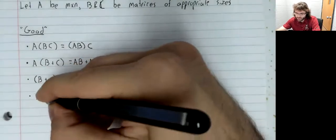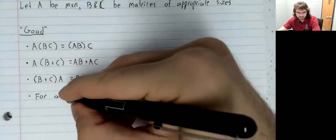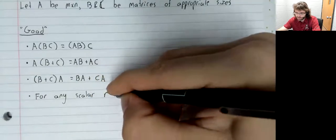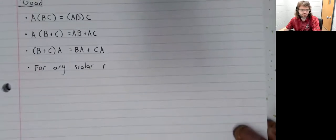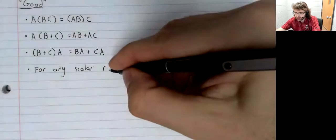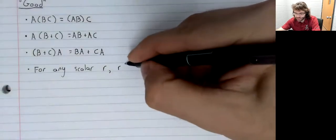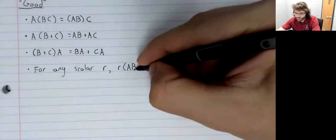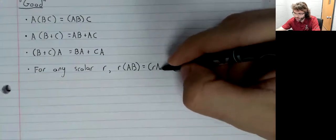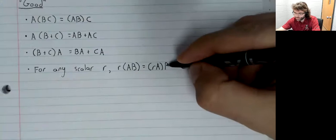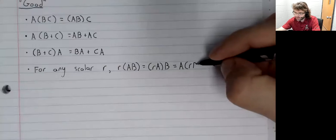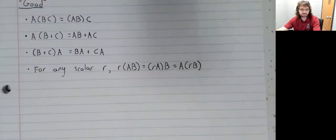We can move scalars around. We've seen plenty of examples of this when we were working with vectors. It's true for matrices as well. So if we've got a scalar times a product, we can move this scalar and these parentheses around.